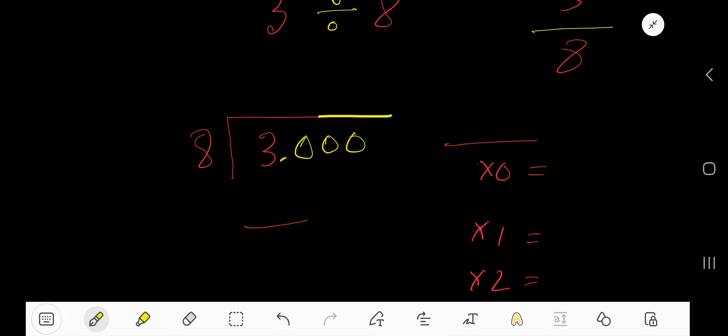And then take any number of zeros. 8 goes into 3 how many times? 0 times since 3 is smaller. 0 times 8 is 0. If you subtract you get 3. Bring down this 0, but before this 0 we have a decimal, so the decimal will come directly to the quotient. 30. 8 goes into 30 how many times? We need the multiplication table of 8.